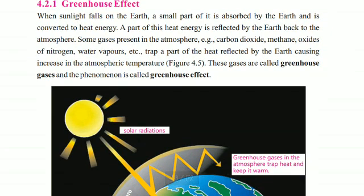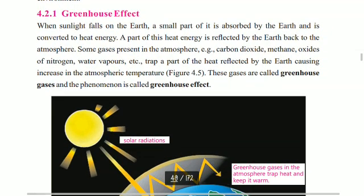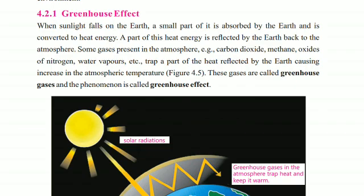Some gases, for example carbon dioxide, methane, oxides of nitrogen, and water vapors, trap a part of the heat reflected by the earth, causing increased atmospheric temperature.